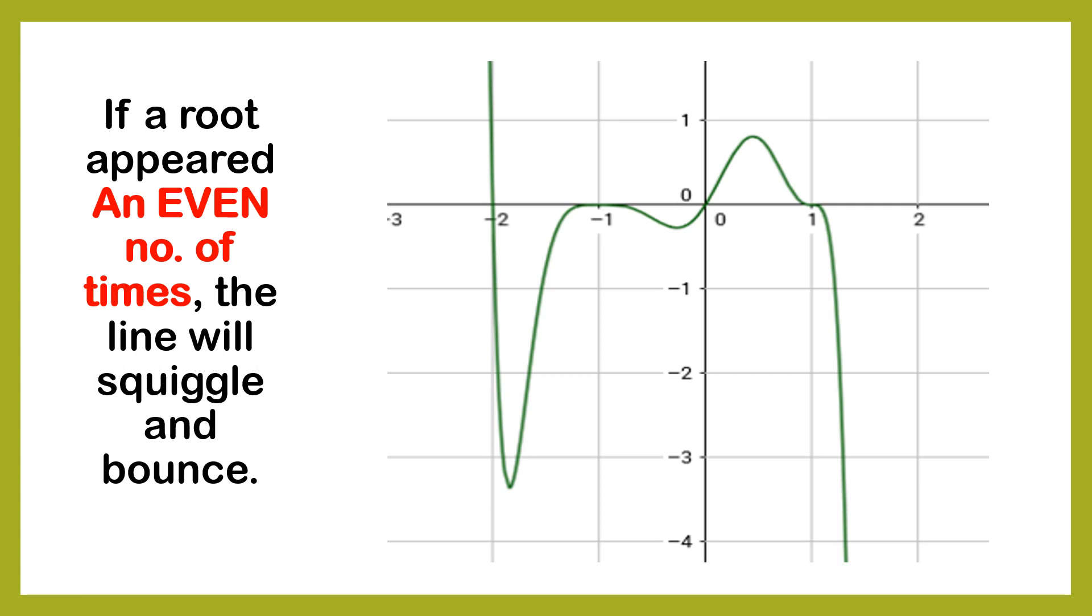If a root appeared an even number of times, what are even number of times? 4, 6, 8. It says, the line will squiggle and bounce. Here's our example. It came from the bottom, but because its root appeared an even number of times, higher than 2, like 4, 6, 8, it flattens, but it still bounces down. It doesn't pass through.